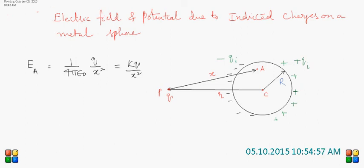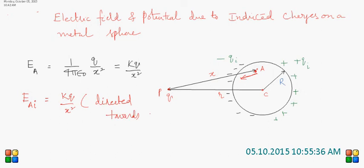Once induction is over, the electric field intensity at point A due to the induced charges is equal and opposite to the previous one. So it is also equal to KQ over x squared, but directed towards Q. Because the electric field due to charge Q is away from the charge, the electric field due to induced charges is towards Q, so that the net electric field intensity at point A is zero. This gives the electric field intensity at any point on the surface due to the induced charges.